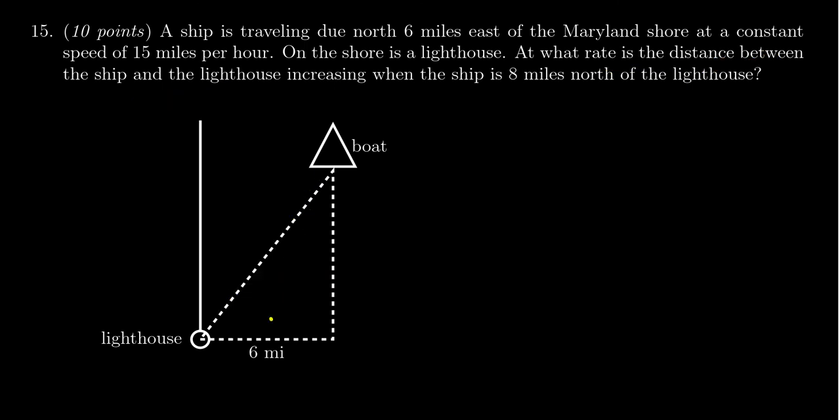Let's give some names here. Let's call the horizontal distance, which would be the east-west distance here, let's call that x. Let's call the north-south distance, we'll call that y. And then the distance between the lighthouse and the boat, we'll call that z. So we get x, y, z.